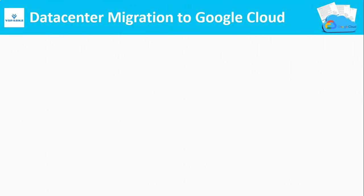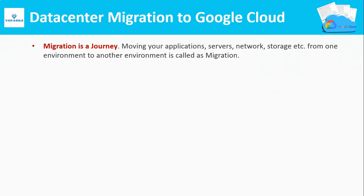What is Migration? Migration is actually a journey that contains multiple processes to follow. Moving your applications, servers, network, storage, etc. from one environment to another target environment is called as migration. In our case, the source environment is our on-premises or any other cloud, and the target environment is Google Cloud Platform.